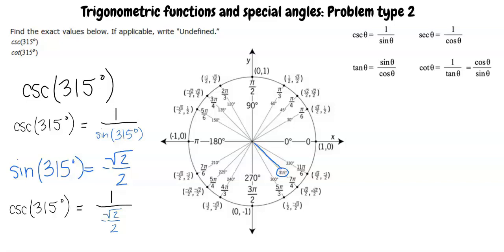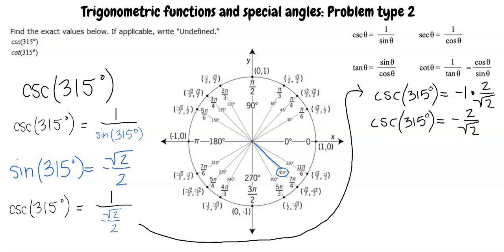Now we will simplify this fraction. We know that dividing by a number means that we must multiply by its reciprocal. Now we have negative 1 times 2 over square root of 2. This simplifies to negative 2 over square root 2.